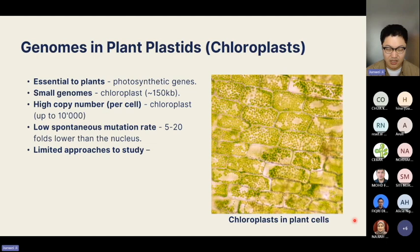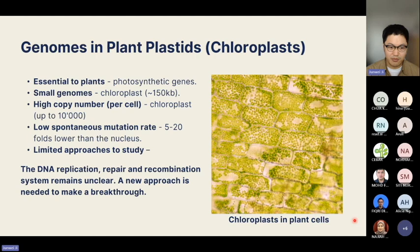The chloroplast is a very small genome with a very high copy number — up to 10,000 copies per plant leaf cell. Even with such high copy number and dense DNA in a very small compartment, they have a very low spontaneous mutation rate, which can be five to 20-fold lower than the nucleus. This leaves us with very limited approaches to study this genome, and the DNA replication, repair, and recombination system in the chloroplast remains unclear.